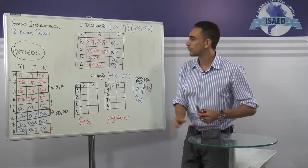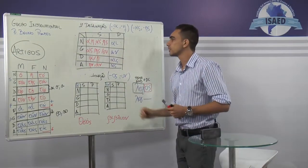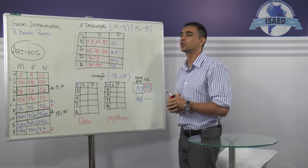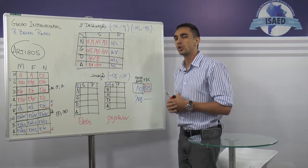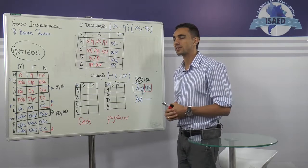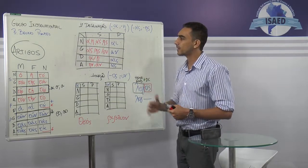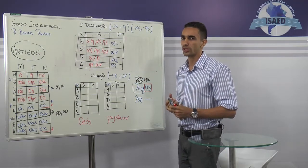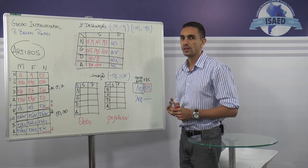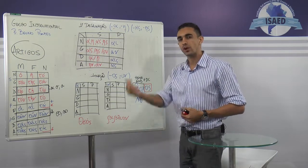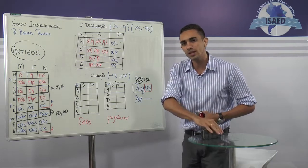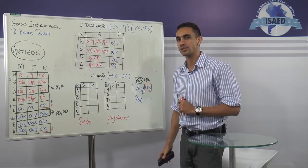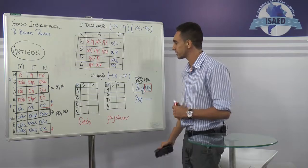Com essa tabela aqui, você consegue construir todas as palavras presentes na primeira declinação terminadas em alfa-sigma, eta-sigma, alfa ou eta, como foi visto aqui. Se eu aprendo a fazer isso, eu posso construir de forma muito clara todas as palavras da primeira declinação. A partir disso, nós vamos agora para a segunda declinação.